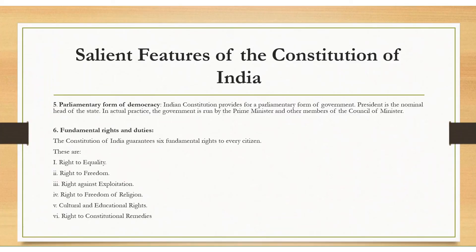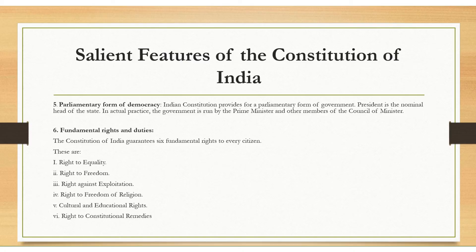The fifth point is parliamentary form of democracy. The Indian constitution provides a parliamentary form of government, which means the president is a nominal head of the state. The government is run by the prime minister and other members of the council of ministers.